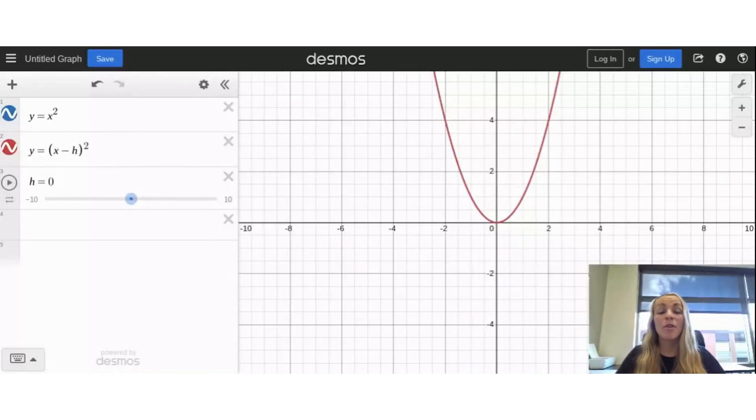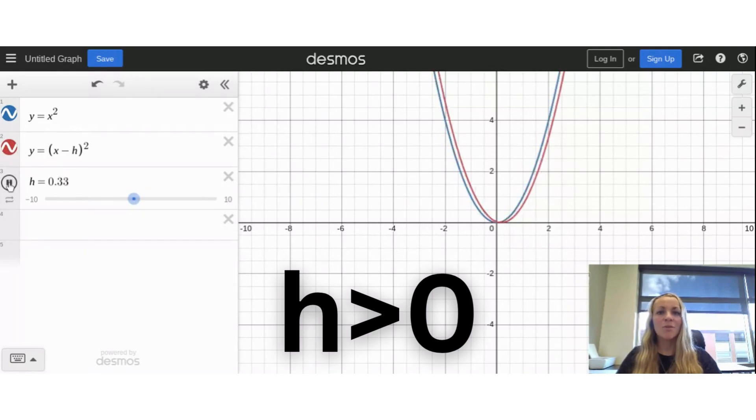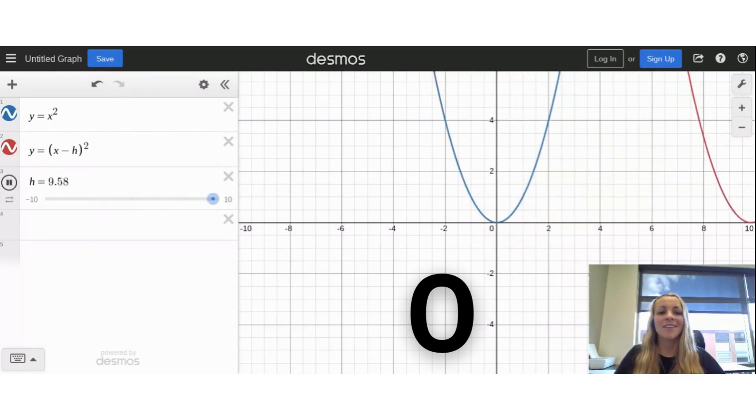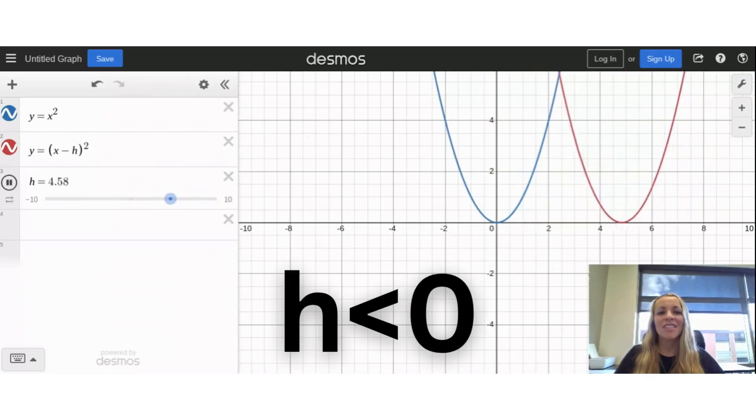Now we're going to explore the parameter h. Notice that when h is 0, it looks exactly like the parent graph. But as I press play and h is greater than 0, it moves to the right. And when h is less than 0, it's moving to the left.